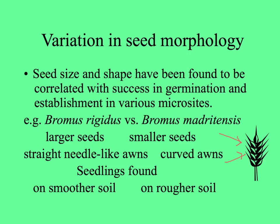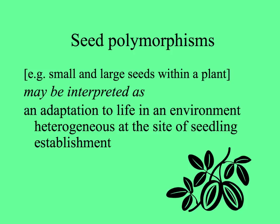Consequently, in nature you find seedlings of rigidus on soil that's very smooth, and madritensis establishes on rougher soil. So some of these heterogeneities we've been talking about before — polymorphisms in seed size, or maybe plants that have two distinct sizes of seeds — could be interpreted as adaptation to life in an environment that's heterogeneous at the site of seedling establishment. By having different sizes and shapes of seeds, there are more probabilities of establishing a new plant.